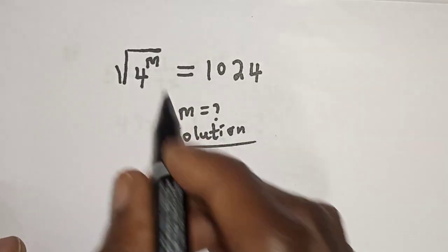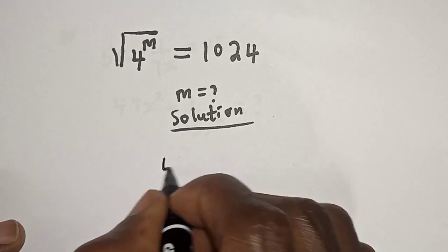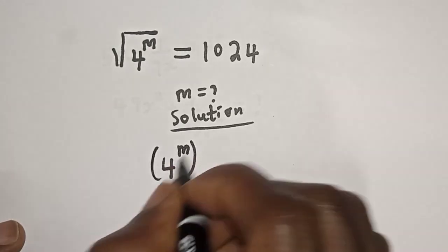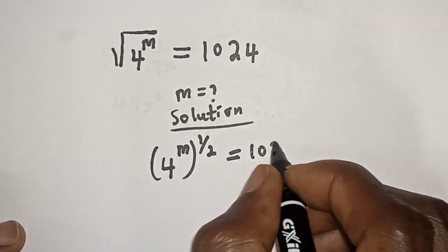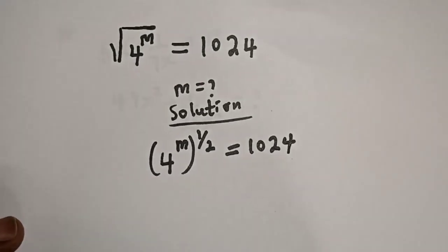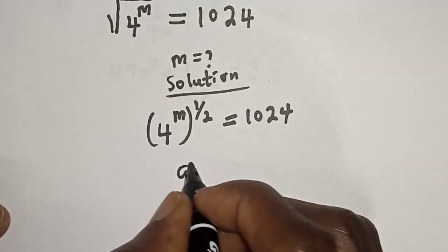Square root of four raised to power m can be written as four raised to power m to the power of one over two is equal to 1024. Then take note of this rule that if you have a raised to power m